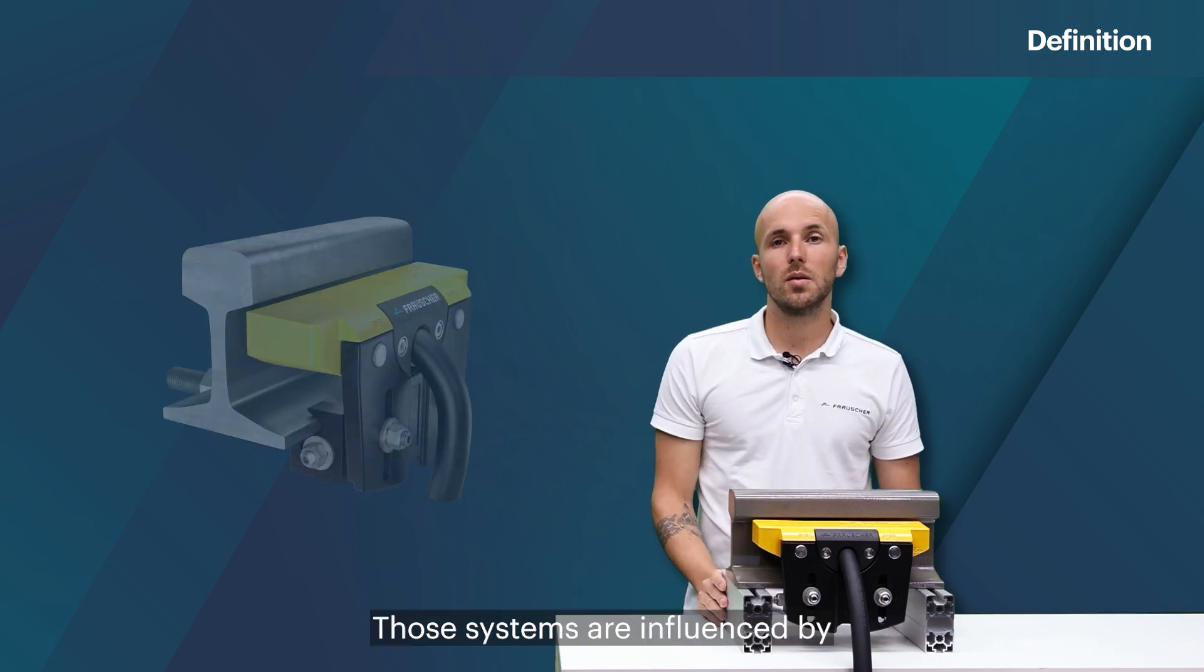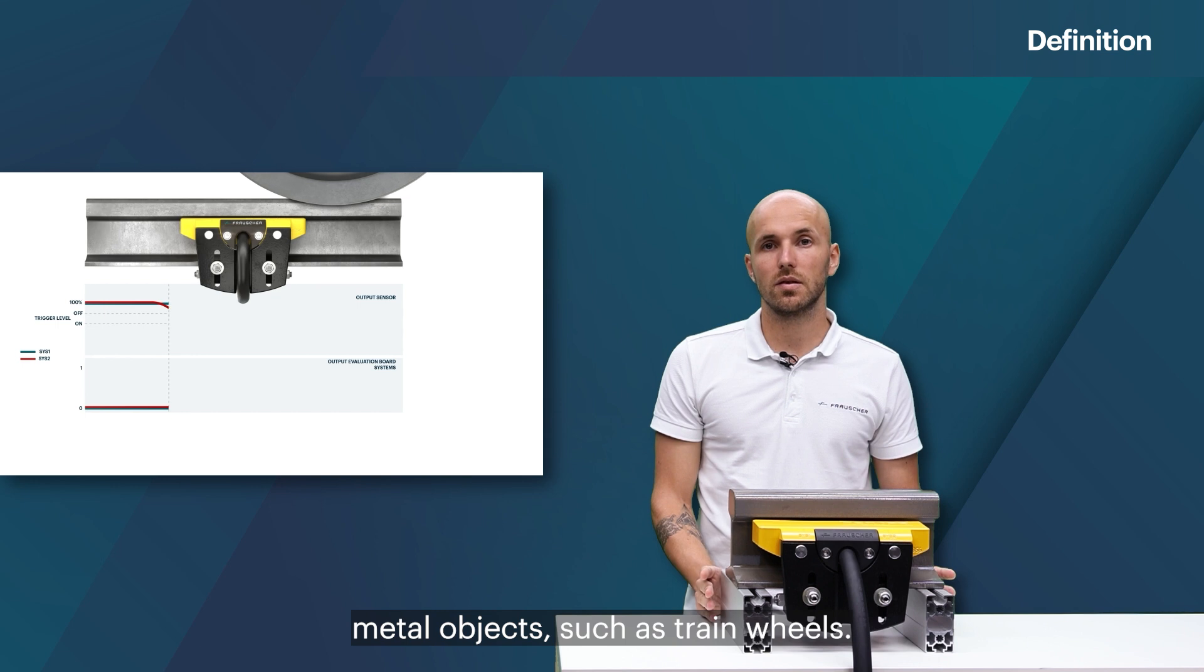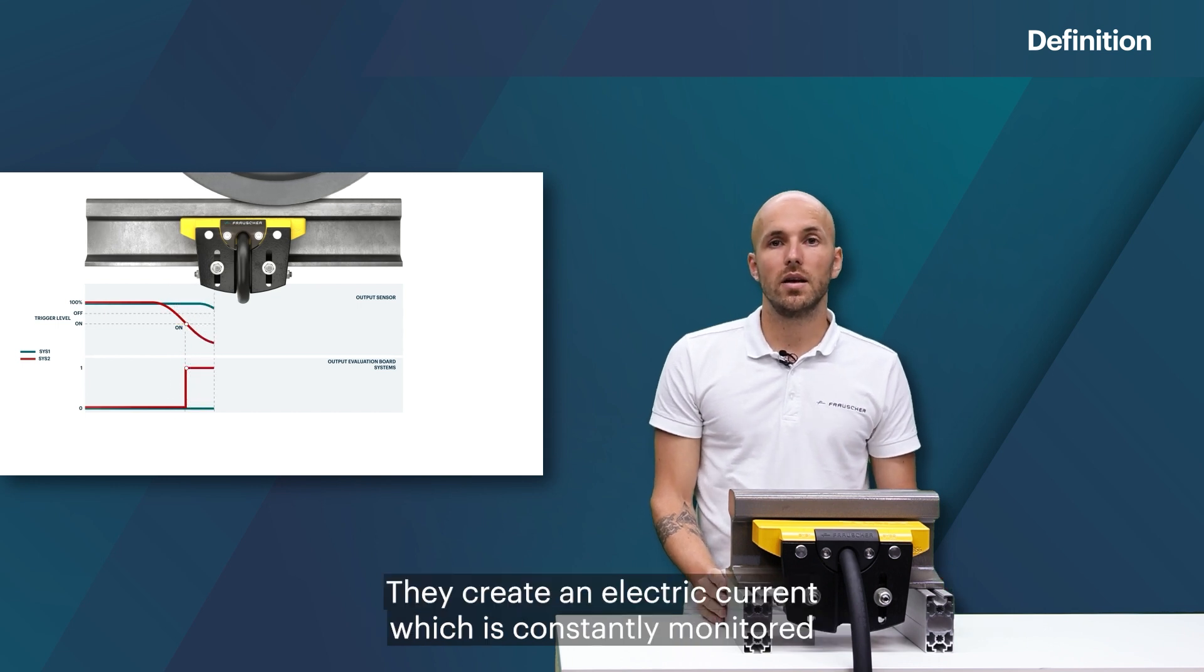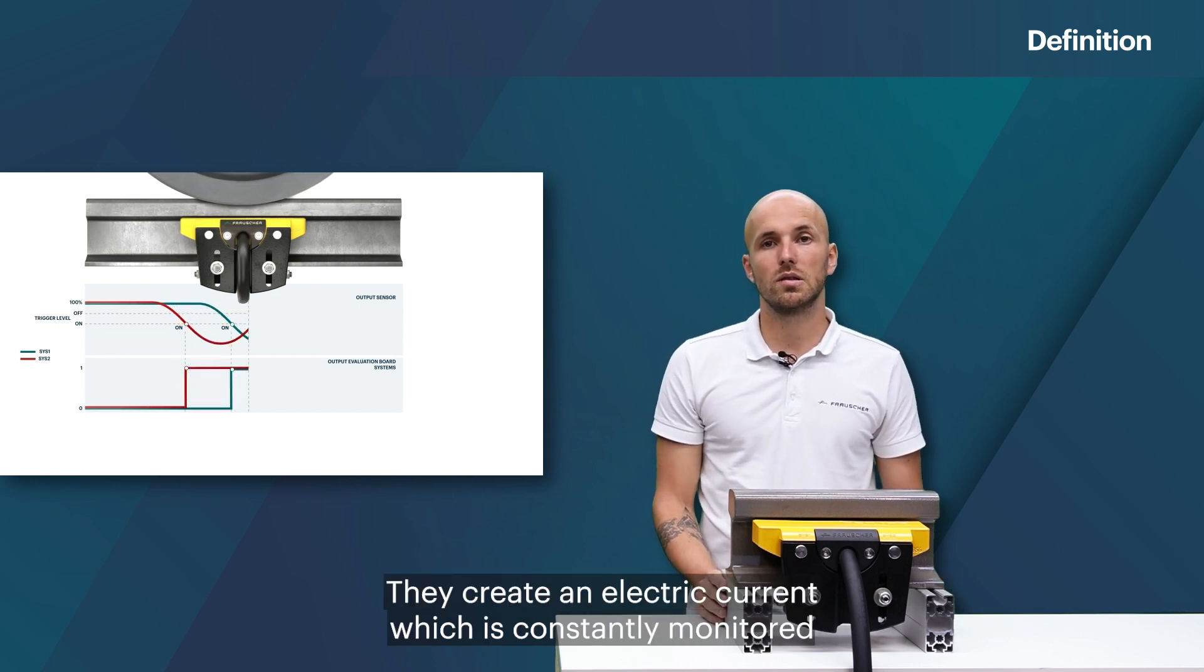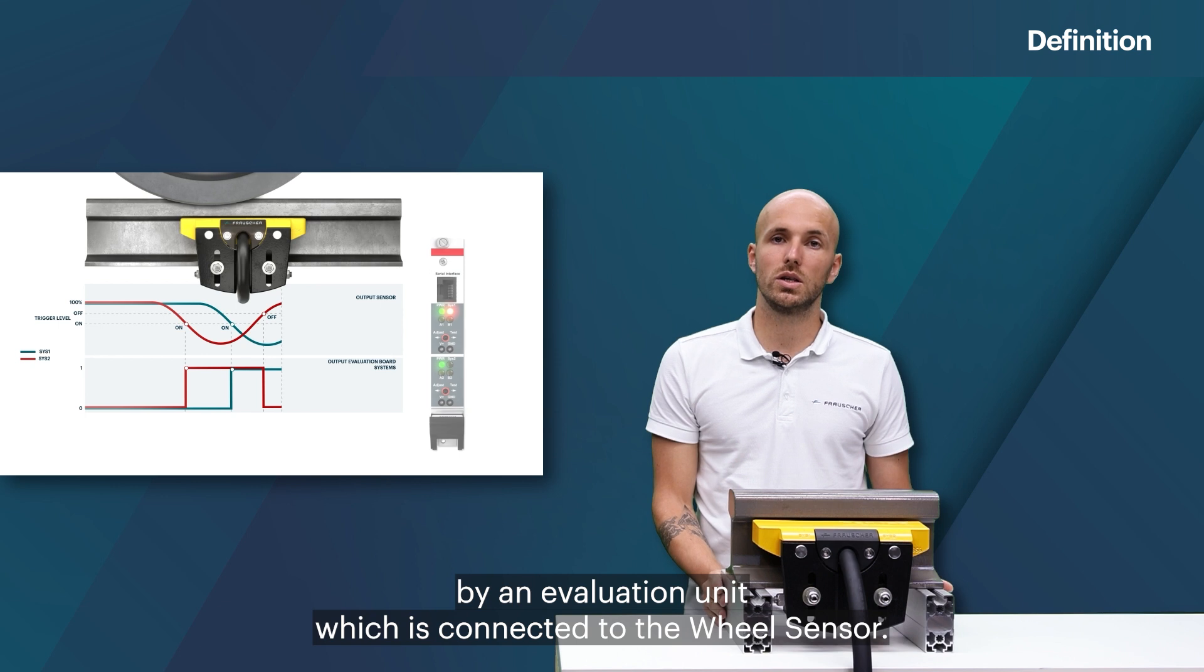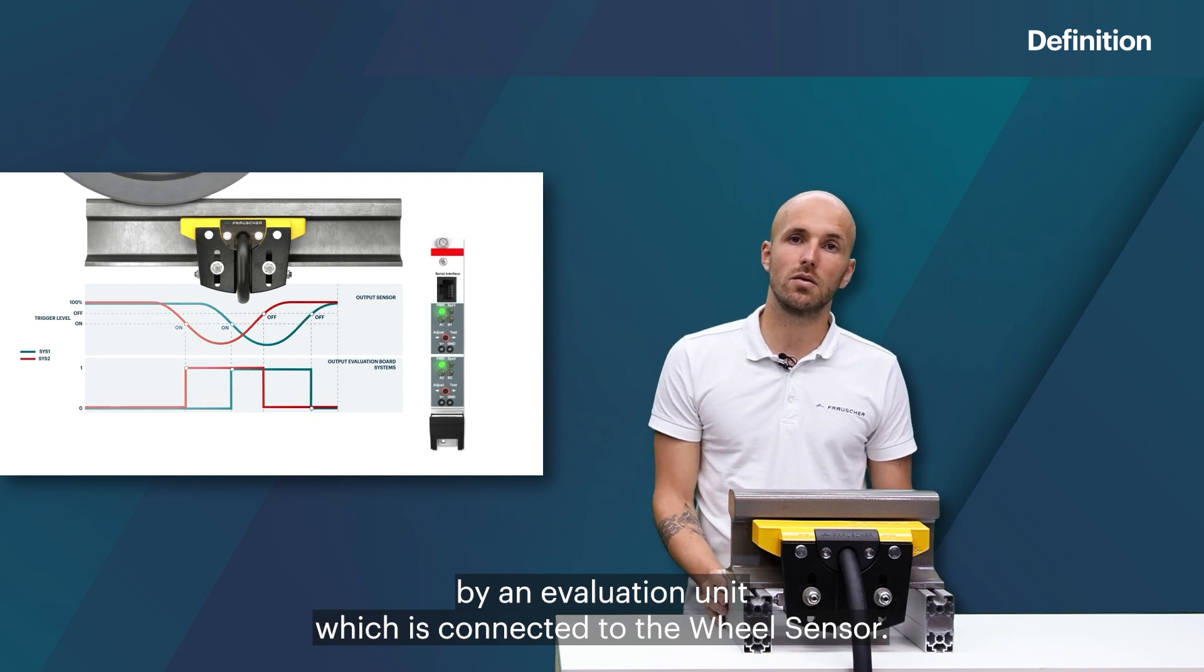Those systems are influenced by metal objects such as train wheels. They create an electric current which is constantly monitored by an evaluation unit which is connected to the wheel sensor.